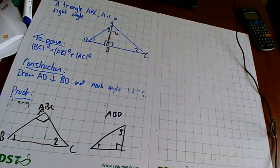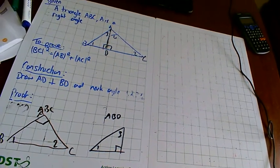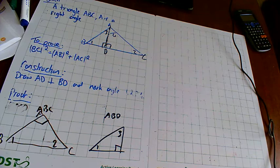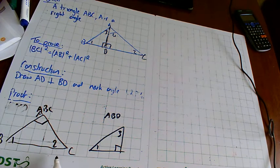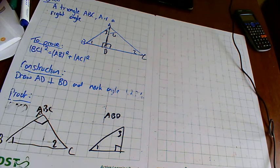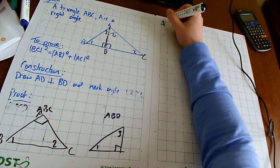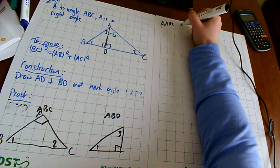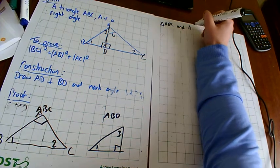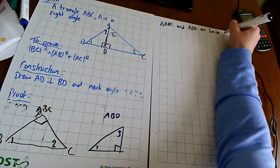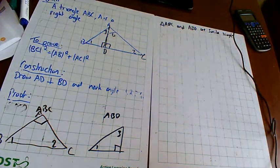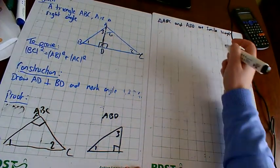Looking at those two triangles, we can say something about them. They both have the same angle — angle one — and they both have right angles. That means angle two and angle three must be the same. Those triangles have the same angles in them. They're obviously not the same size, but they have the same angles, so triangles ABC and ABD are similar triangles — meaning one is just an enlargement of the other but in the same ratio.